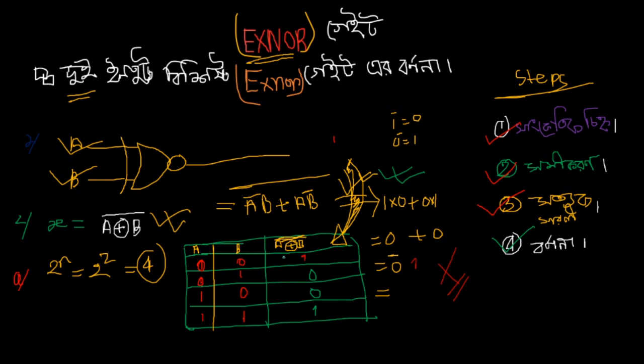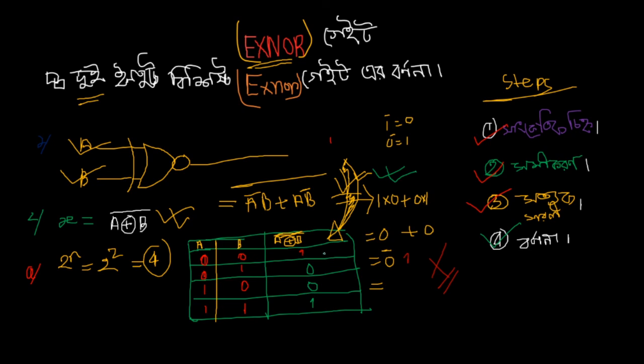The system works so you can understand: when inputs are the same, you get output 1. When inputs differ, you get output 0. This is how the X-NOR gate operates.